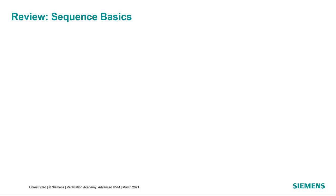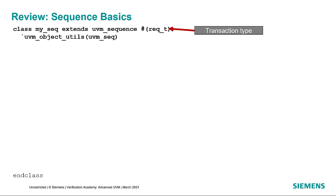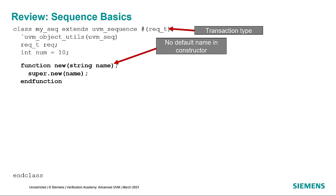You might have a master sequence that starts an initialization sequence and then calls multiple sequences in parallel as the main part of your test, followed by a cleanup sequence. Sequences themselves, along with transactions, are customizable via the factory — another way of reusing the structure while using the test to modify the type of transaction generated or the type of initialization sequence that you run.